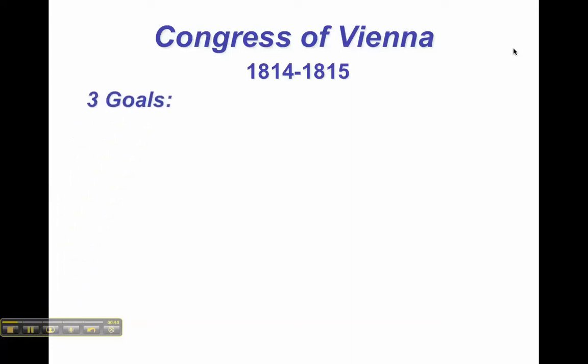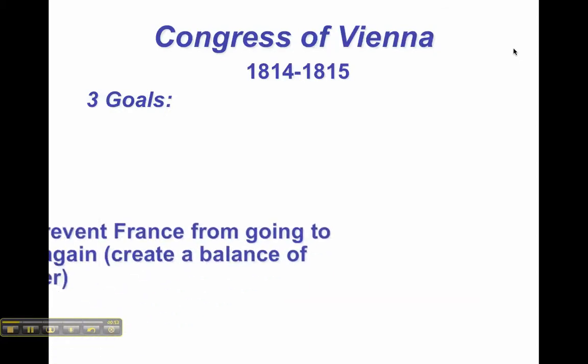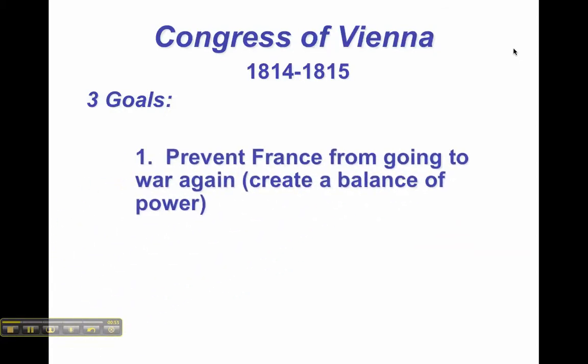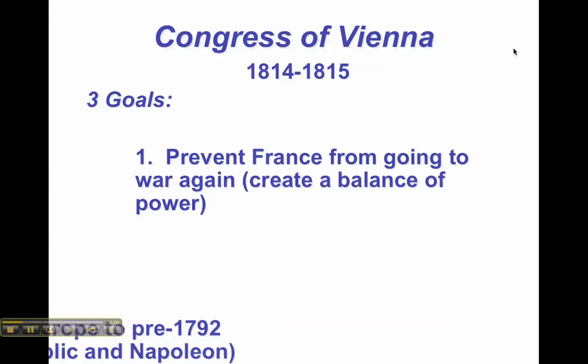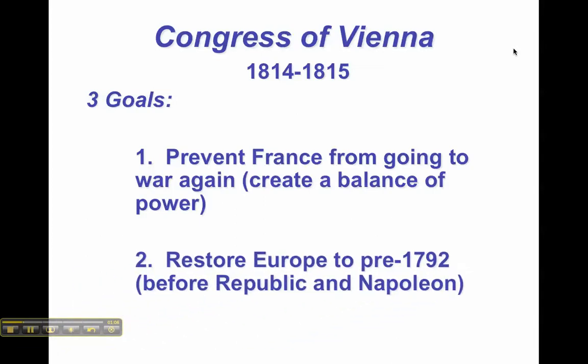The Congress of Vienna had three main goals. First and foremost, they wanted to redraw the map so that there was a balance of power in order to prevent France from annexing other territories in the future. They also wanted to turn back the clocks to what Europe had looked like before 1792, when France became a republic and Napoleon had come to power.